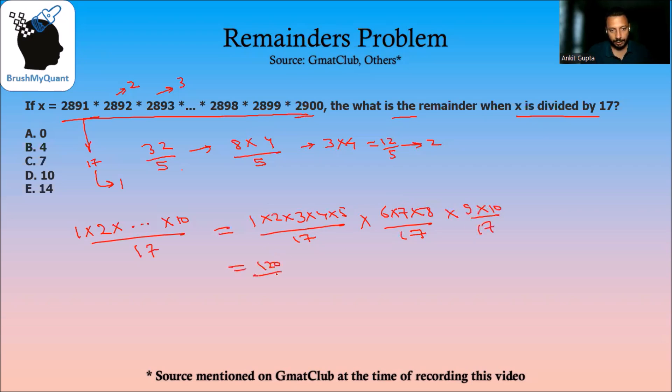This can be written as 120 by 17 multiplied by 336 by 17 multiplied by 90 by 17. This remainder will be 1, this will be 13, and this will be 5. So overall remainder is 65. This has to be less than 17, so we can divide it further by 17 to get the final remainder as 14.